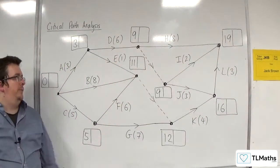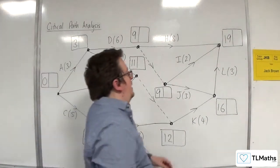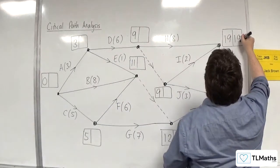So that was the forward pass. Right, now the backward pass. So we go to 19 there.